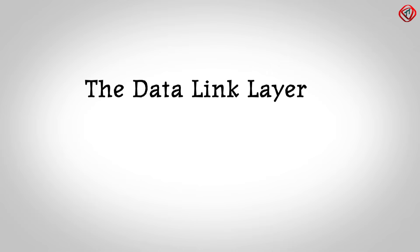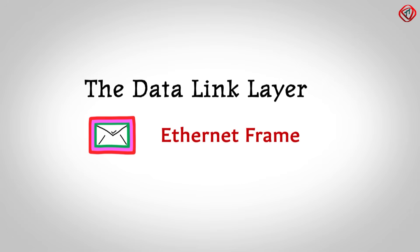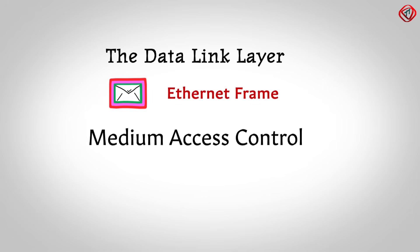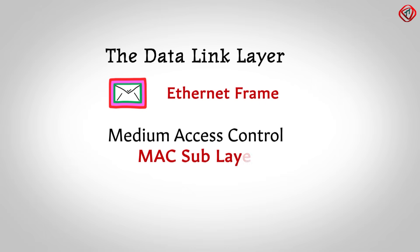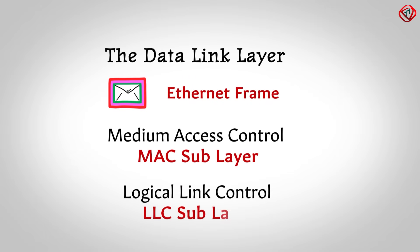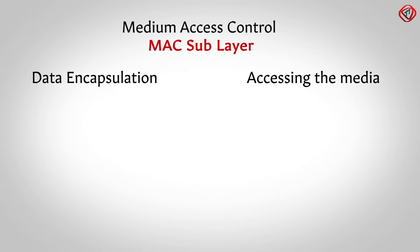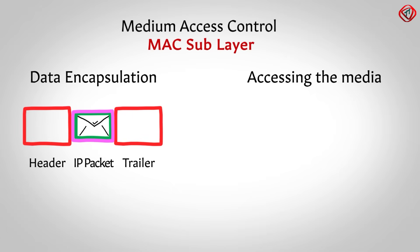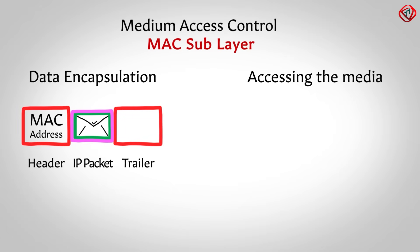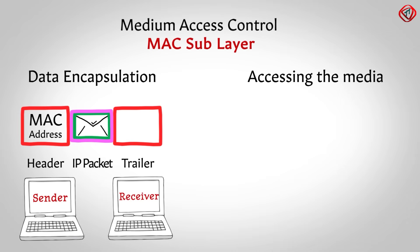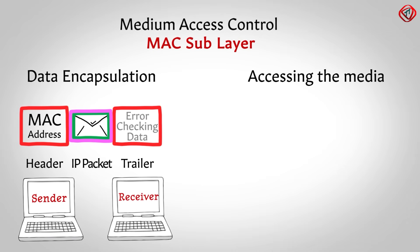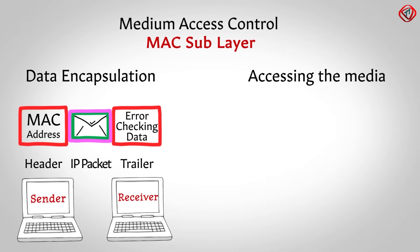Next is the data link layer. The data unit in the data link layer is called an Ethernet frame. The data link layer is divided into two sublayers: Medium Access Control or MAC sublayer and Logical Link Control or LLC sublayer. The MAC sublayer is responsible for data encapsulation and accessing the media. In data encapsulation, the MAC sublayer adds a header and a trailer to the IP packet received from the network layer. The header contains the MAC addresses of the sender and receiver. The trailer contains 4 bytes of error checking data used to detect errors in the received Ethernet frame.